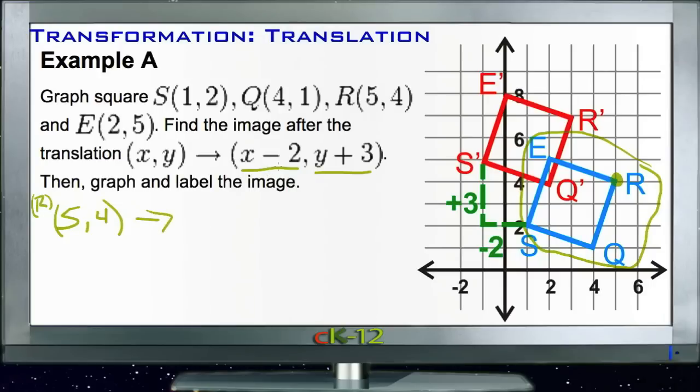So we're going to have 5 minus 2, and then y plus 3, so 4 plus 3. So R prime, or in other words the new location for R, should be 5 minus 2 which is 3, and 4 plus 3 which is 7. If we take a look at R prime over here, we can see that its location is (3, 7), which is exactly what we calculated.